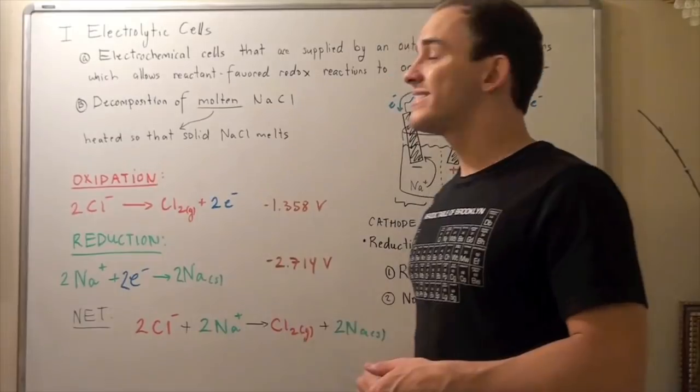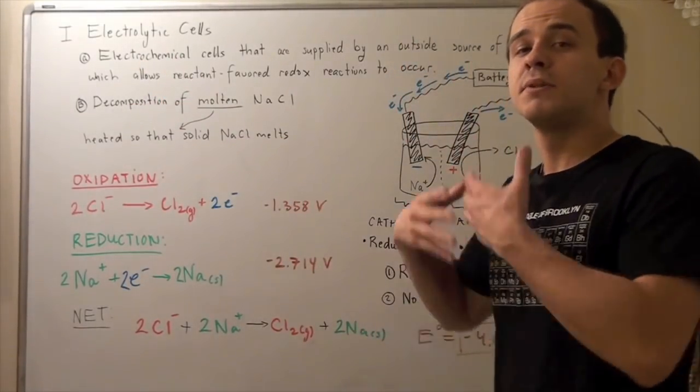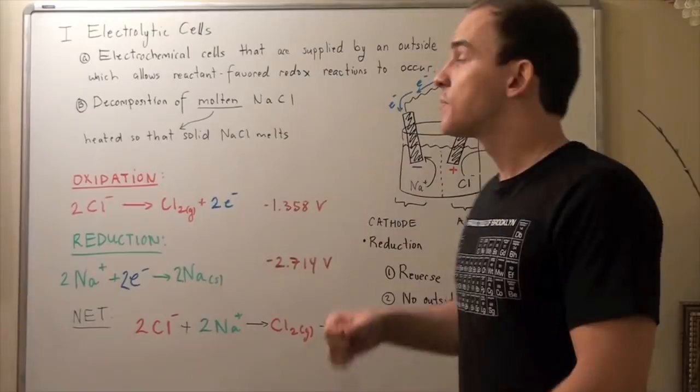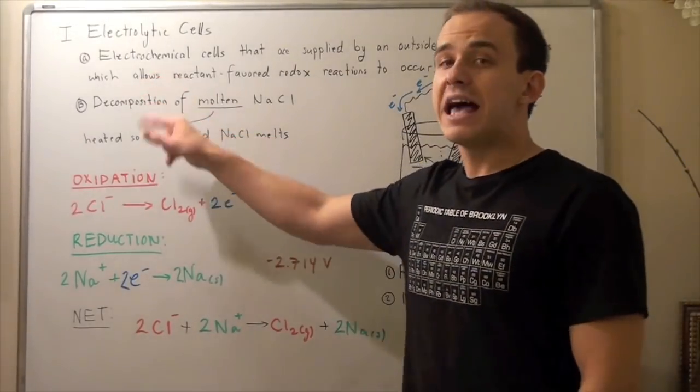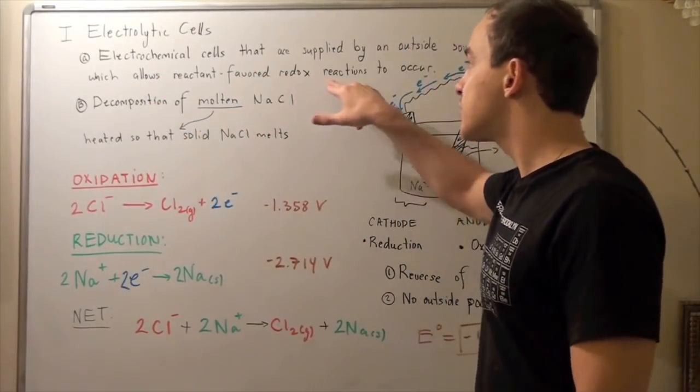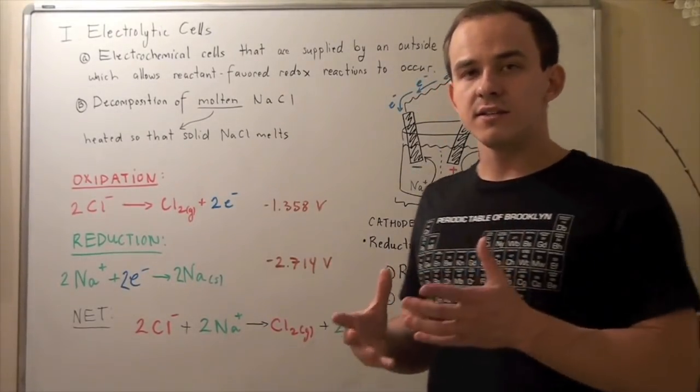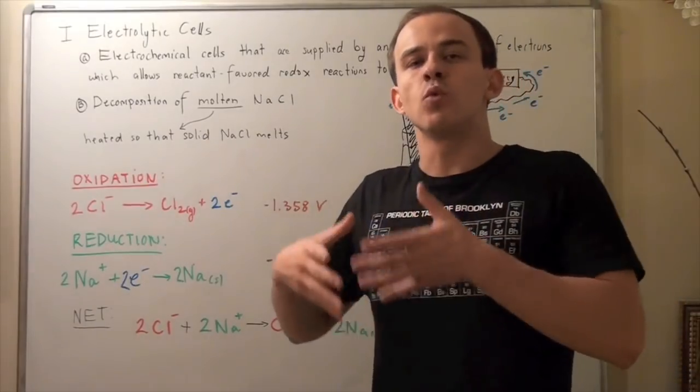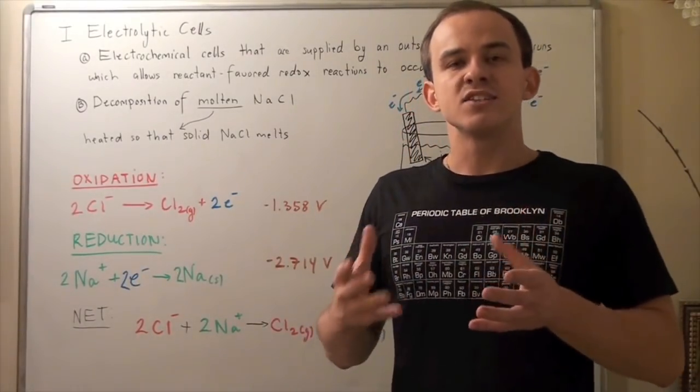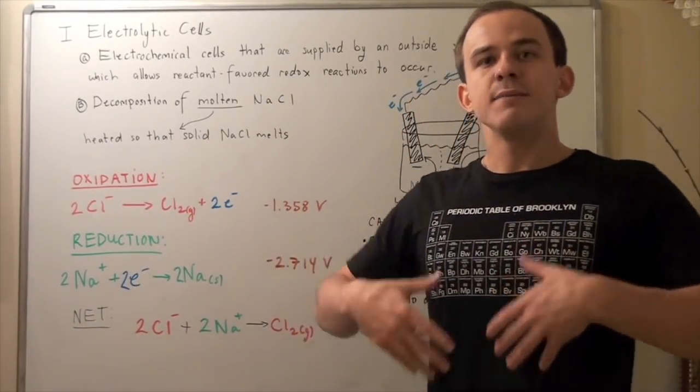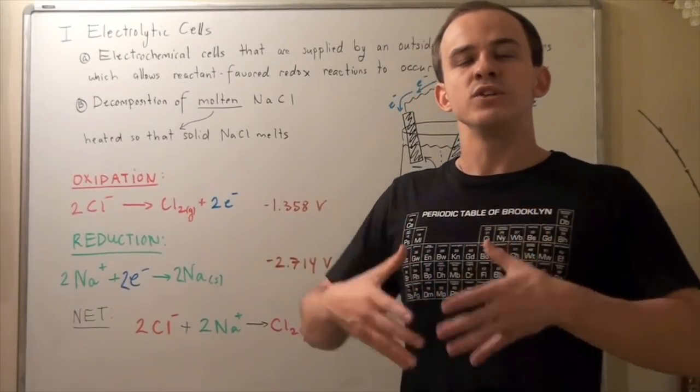Electrolytic cells are electrochemical cells that are supplied with an outside source of electrons, which allows reactant-favored redox reactions to occur. Recall that voltaic cells convert chemical energy into electrical work via the process of moving electrons in a spontaneous product-favored reaction.